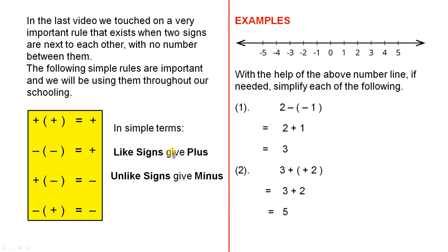So in simple terms, like signs give plus. So the two like signs are the two positive signs, the two plus signs, and the two like signs are the two negative signs. And in each case, they both give a plus.